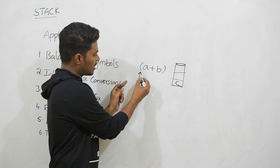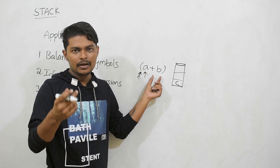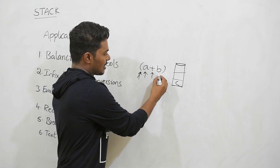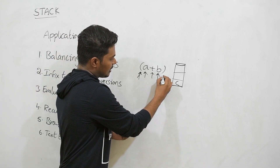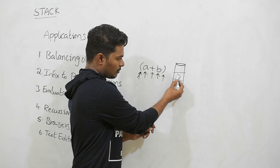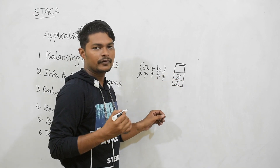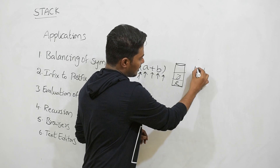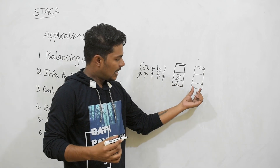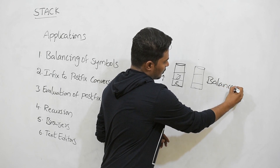Now this open bracket is pushed onto the stack. Whenever the compiler finds operands like a, b, c or operators like plus or minus, it simply ignores them. When it encounters a closing bracket matching the opening bracket, it pops both of them. At the end of the expression, the stack is empty, and we say the expression is balanced.